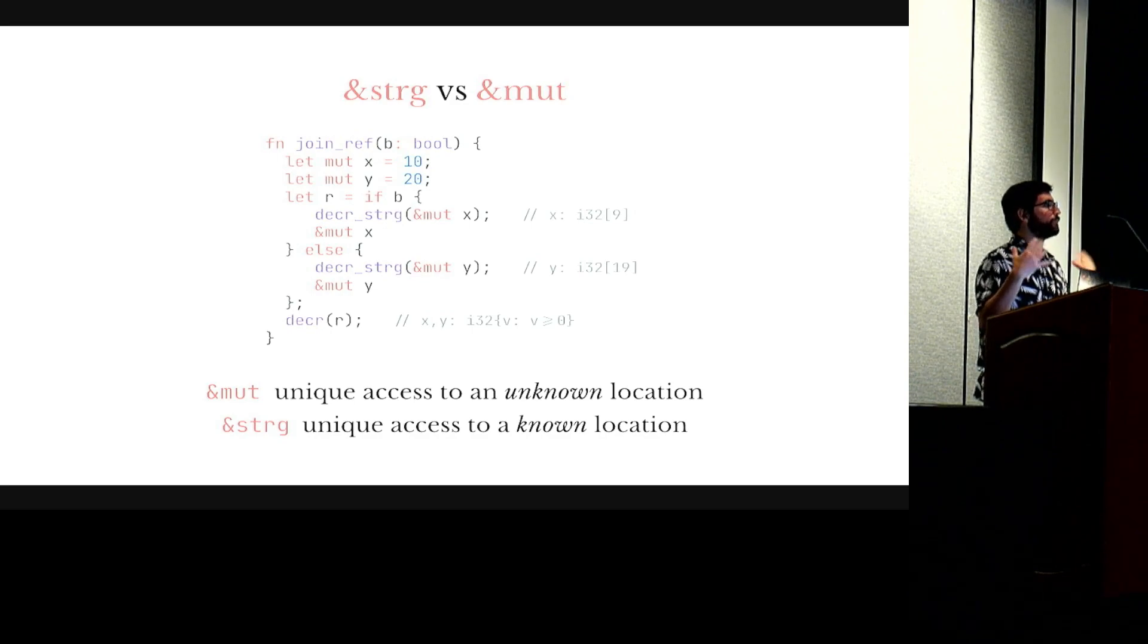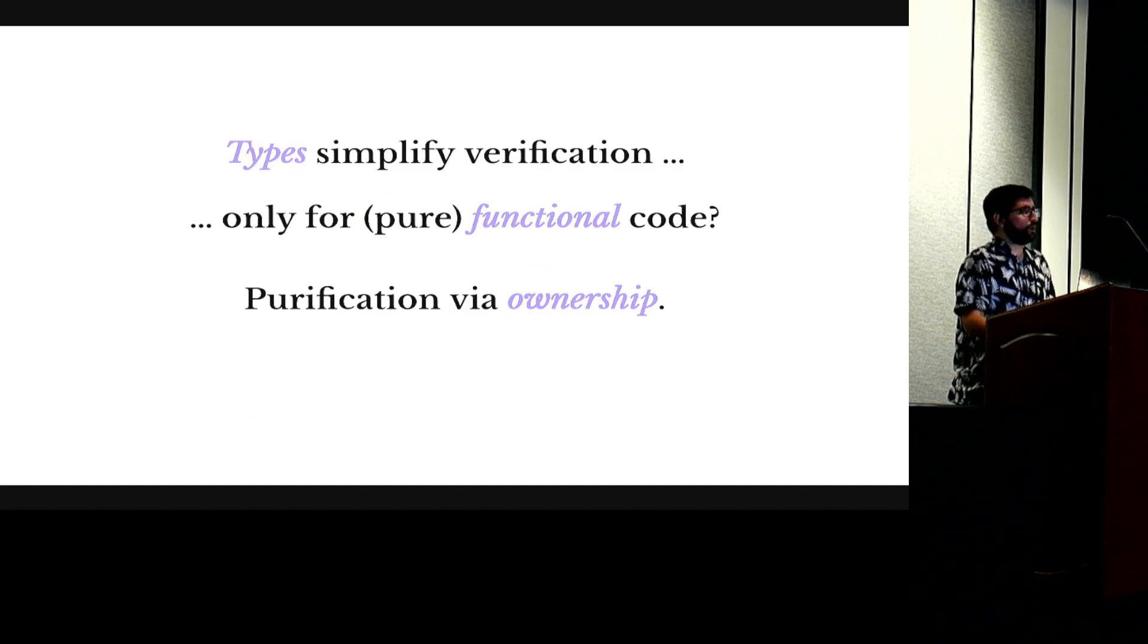But as soon as we merge the control flow and we lose track of which location we're pointing to, Flux will automatically pack it in a mutable reference by inferring some invariant that is true for all the locations we could possibly point to. From now on we cannot call the stronger version of decker, but we can call the weaker one that only preserves the invariant.